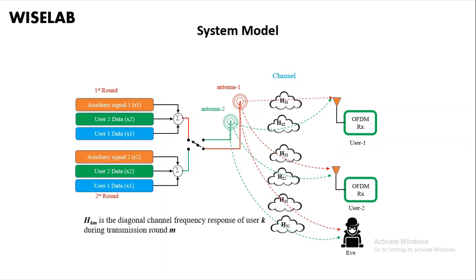This transmission is done in the presence of an eavesdropper. H represents the different channels between the transmitter, the base station, and the receivers during each round.